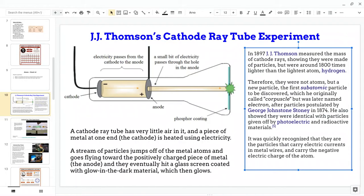He showed that these cathode rays were identical with particles given off by photoelectric and radioactive materials. So basically, he realized that electrons are these really small things inside of already really small atoms. It was quickly recognized that electrons are the particles that carry electric currents in metal wires and carry the negative electric charge of the atom. So basically, this experiment discovered electrons.